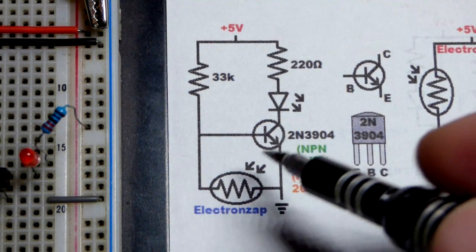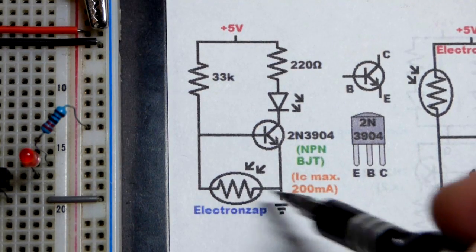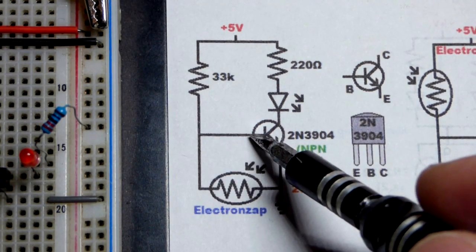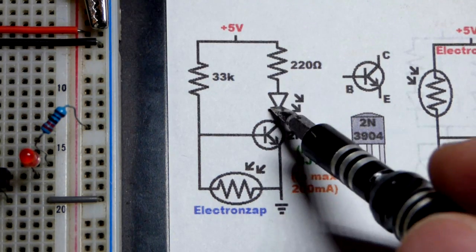But this will show the basic principles. When light is falling on the light-dependent resistor, it has less resistance. It makes a pretty good connection to ground there. It's less than 0.6 volts. The transistor is off. The LED will be off.